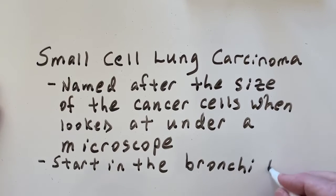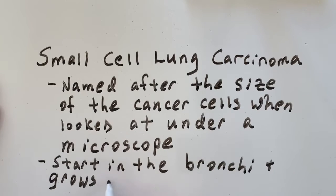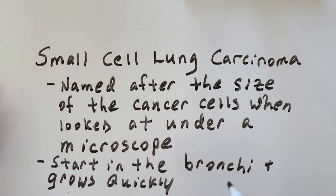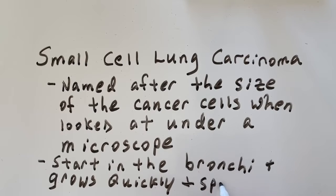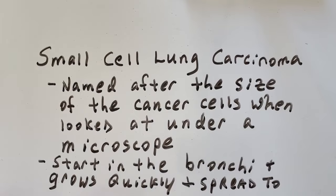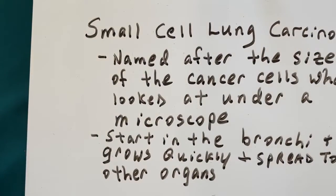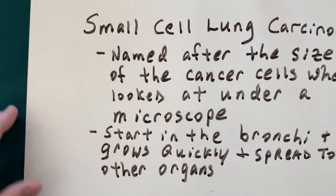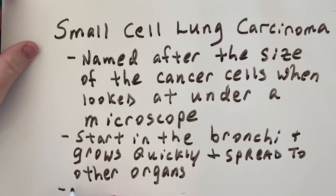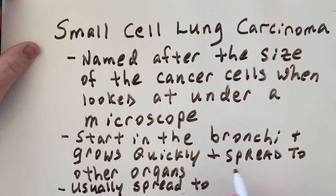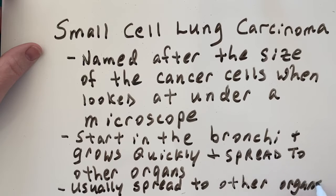It starts in the bronchi and grows quickly, and then spreads or metastasizes to other organs. Usually by the time we diagnose this, it's already spread to other organs — so the cancer is typically found after it has spread.